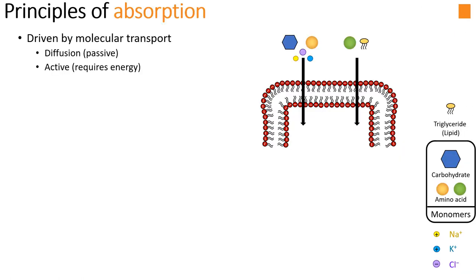Before we get to that, I want to quickly review the principles of absorption. The idea of absorption is that nutrients — macronutrients, vitamins, and minerals — need to be transported from outside the body through the lipid bilayer of epithelial cells, which form the lining, into the cell proper, and then ultimately transported into the bloodstream so they can be circulated to other cells. Absorption is driven by molecular transport processes, and there are two different ways things can be transported: passive diffusion, where molecules move down their concentration gradient, and active transport, which requires energy, either to move a molecule against its concentration gradient or to get it through the membrane.